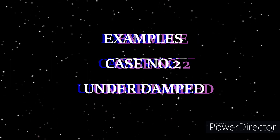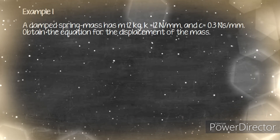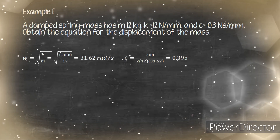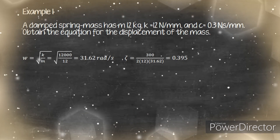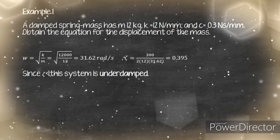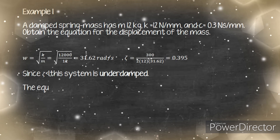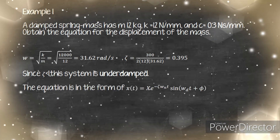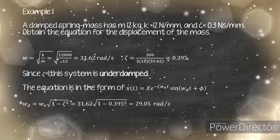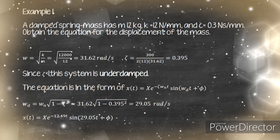Here is an example calculating Case 2 (underdamped). A damped spring-mass system has m = 12 kg, k = 12 N/mm, and c = 0.3 Ns/mm. Calculating zeta gives ζ = 0.395. Since ζ < 1, this is underdamped. The time response is x = e^(−12.493t) sin(2905t + φ).